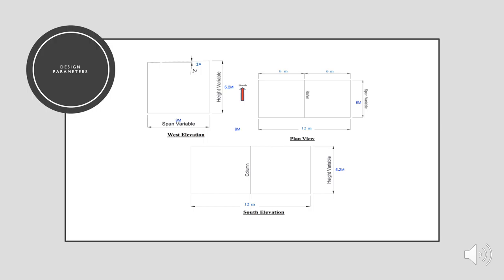The information provided here is in conjunction with this drawing. The design parameters of the shed include a span of 8 metres, height of 5.2 metres, overall shed length of 12 metres, bay spacing of 6 metres, a roof pitch of 2 degrees, and internal purlin spacing of 1.9 metres.